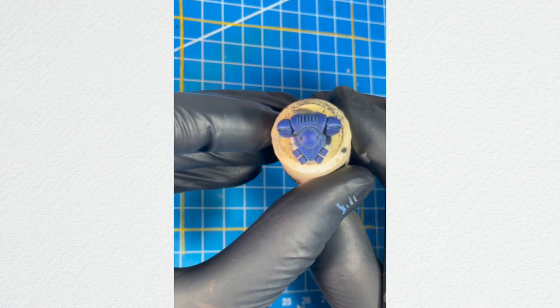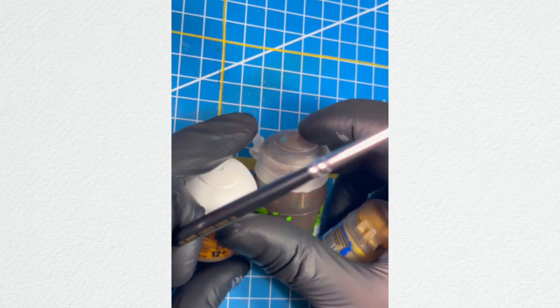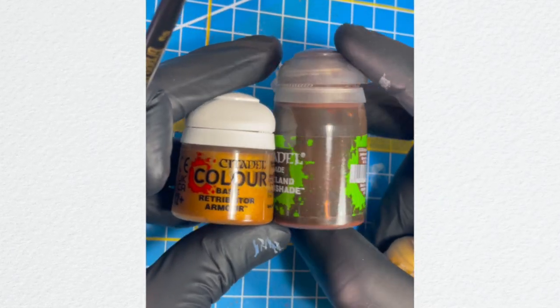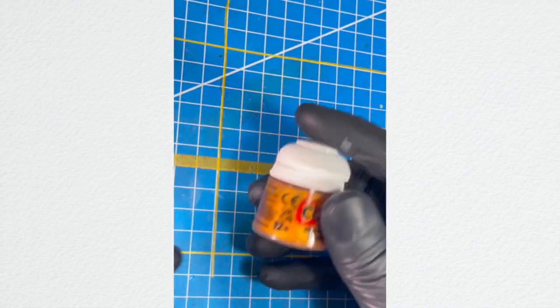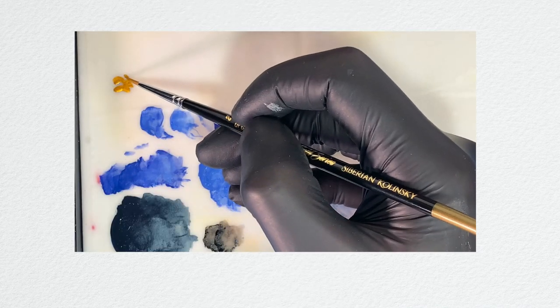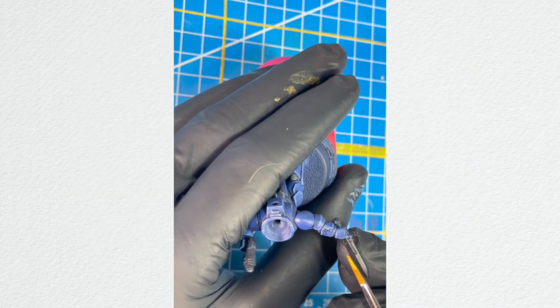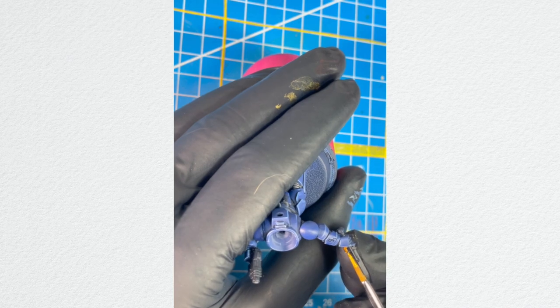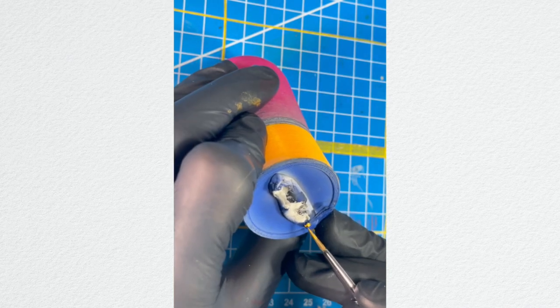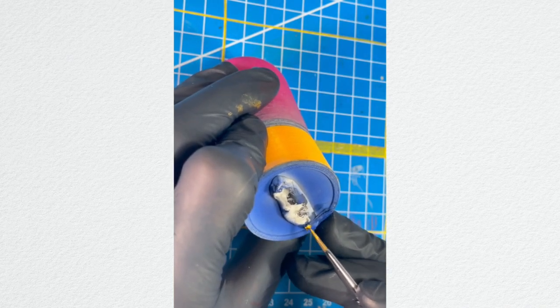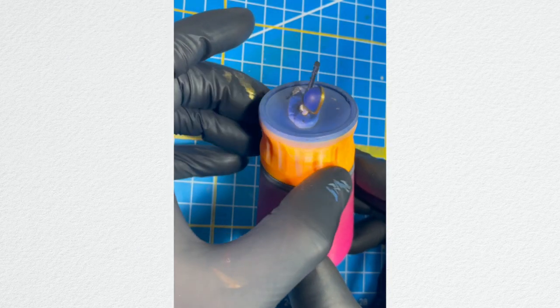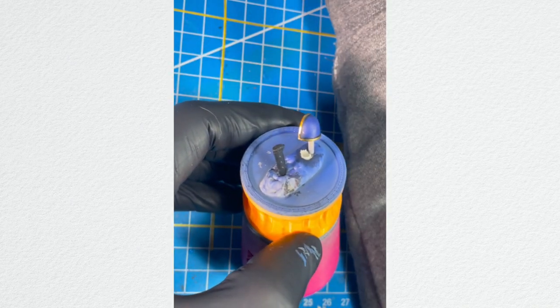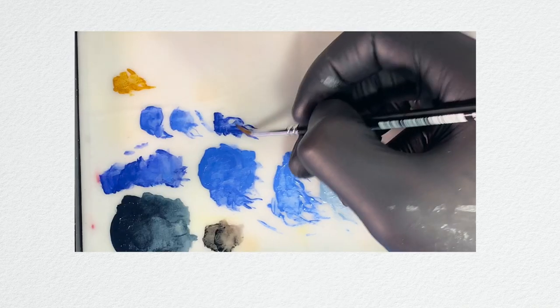Okay, we got your highlights in place. Now it's time for painting the gold details. Now let's grab the Retributor Armor gold, the Reikland Fleshshade—but I'll change it later for Guilliman Flesh—and for highlights we're going to be using the Liberator Gold Armor. So gently, watch out for your base coat and try to catch only the gold details, the aquila at the end of the sword, the little Ultramarine sign on the sword.